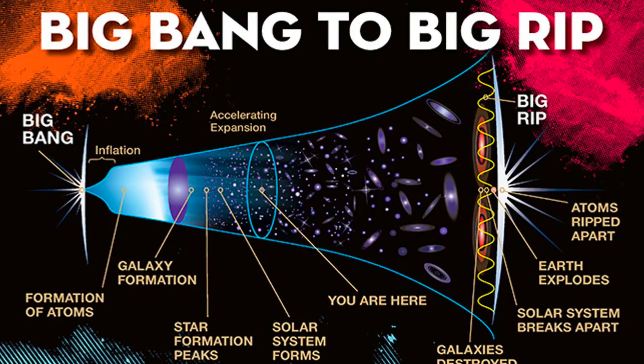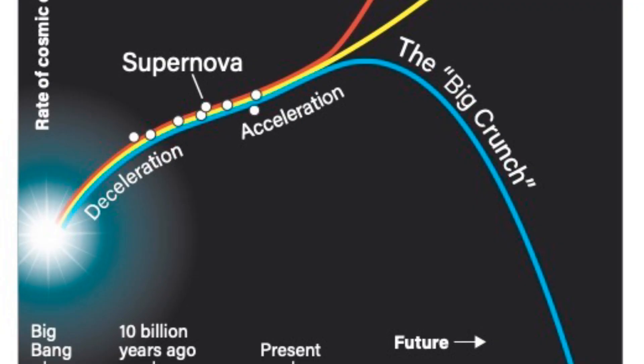The Big Bang Theory also has implications for the ultimate fate of the universe. If the amount of dark energy in the universe is sufficient, it could cause the expansion of the universe to accelerate indefinitely, leading to a big freeze scenario in which the universe becomes too cold and diffuse for life to exist.